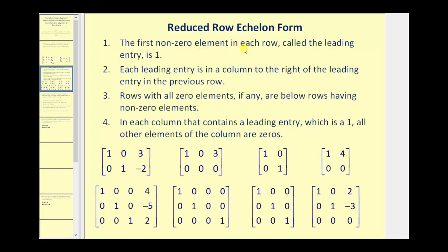Let's begin by reviewing reduced row echelon form. A matrix is in reduced row echelon form if these four conditions have been met. Step one, the first non-zero element in each row, called the leading entry, is one. Two, each leading entry is in a column to the right of the leading entry in the previous row. Three, rows with all zero elements, if any, are below rows having non-zero elements. And finally four, in each column that contains a leading entry, which is a one, all other elements of the column are zeros. All of these matrices satisfy these four conditions and are in reduced row echelon form.